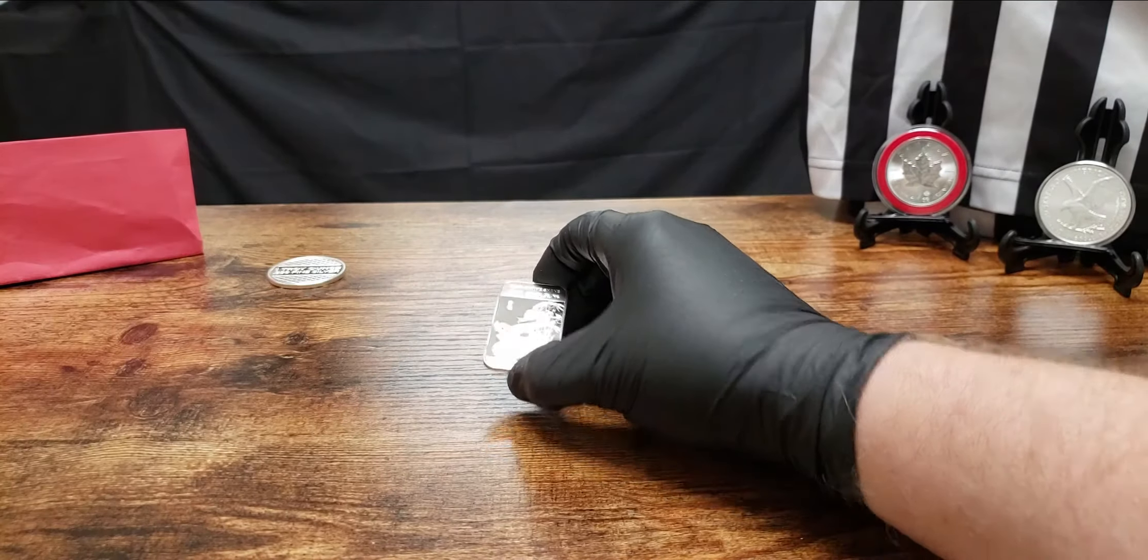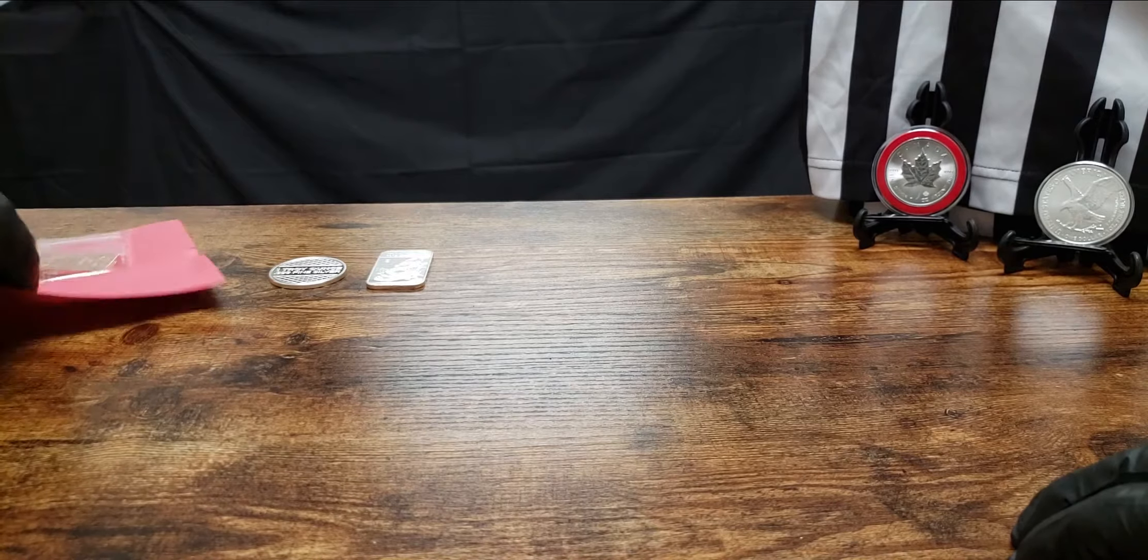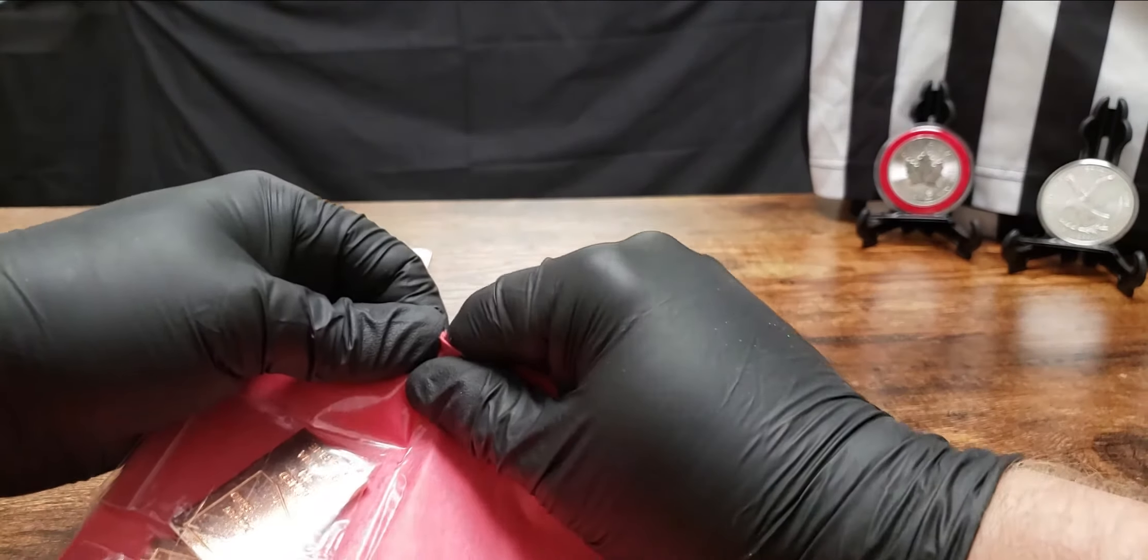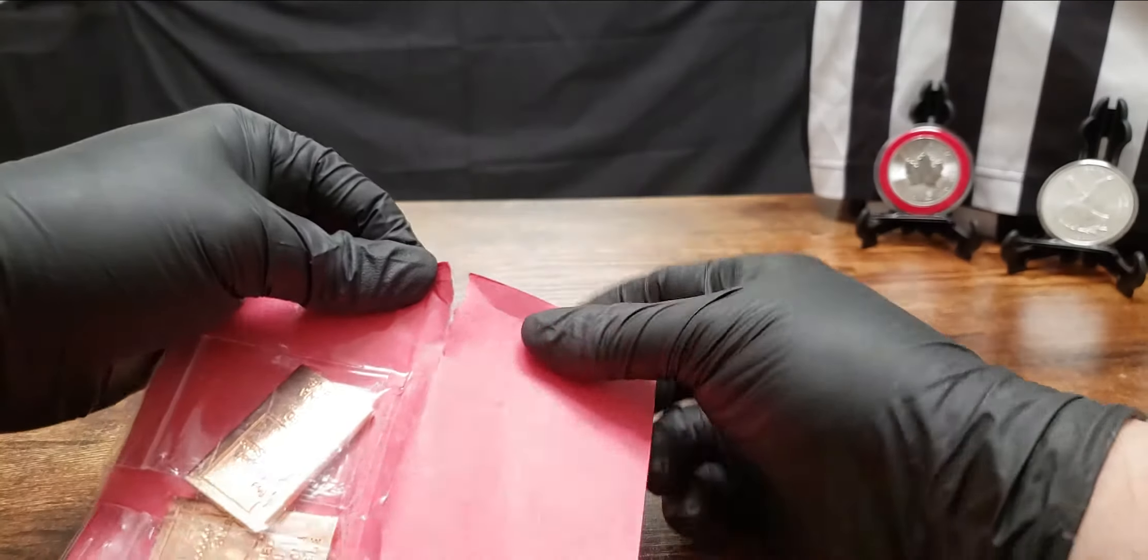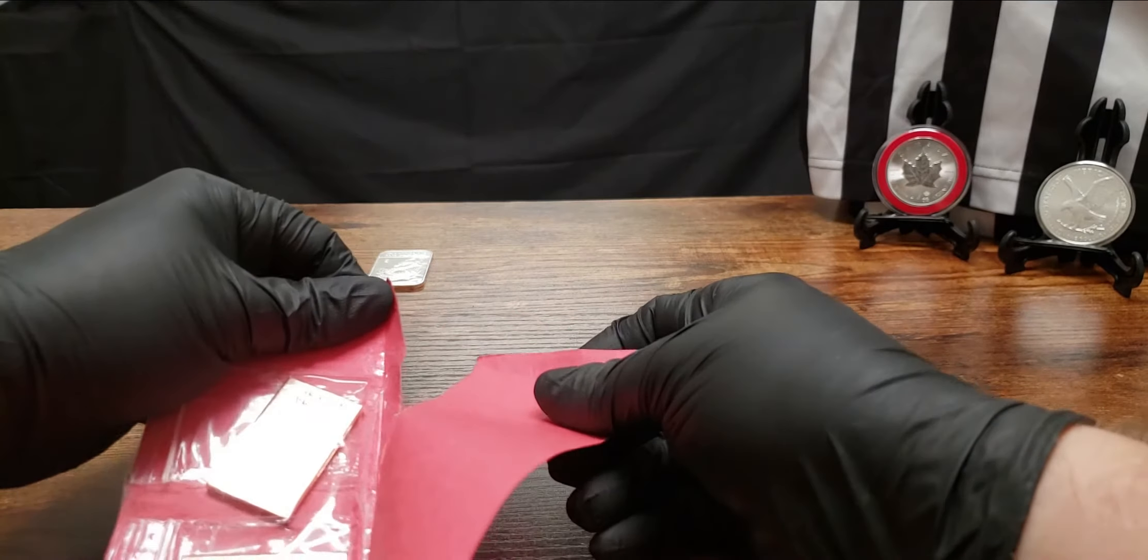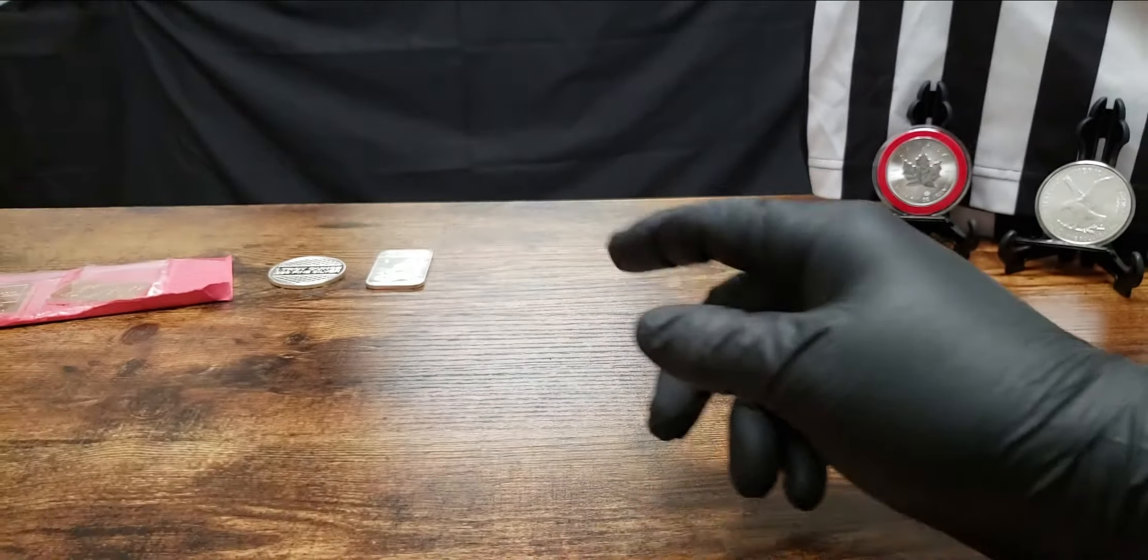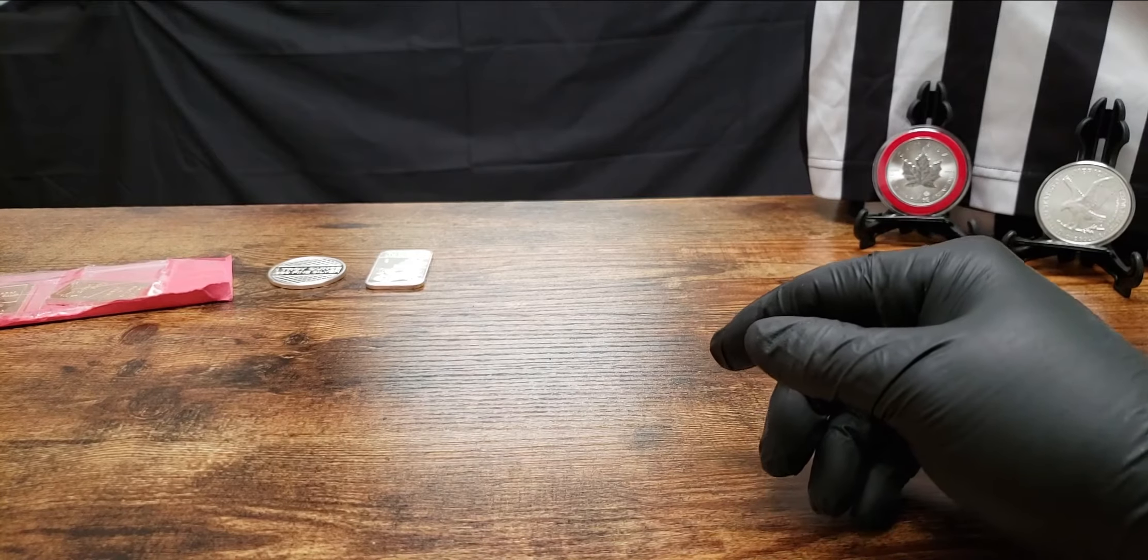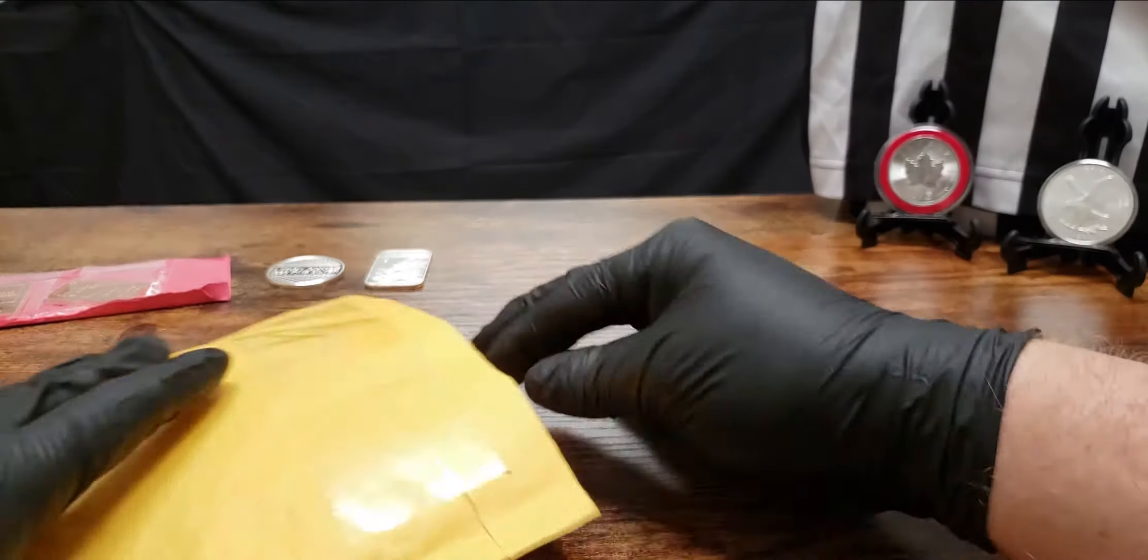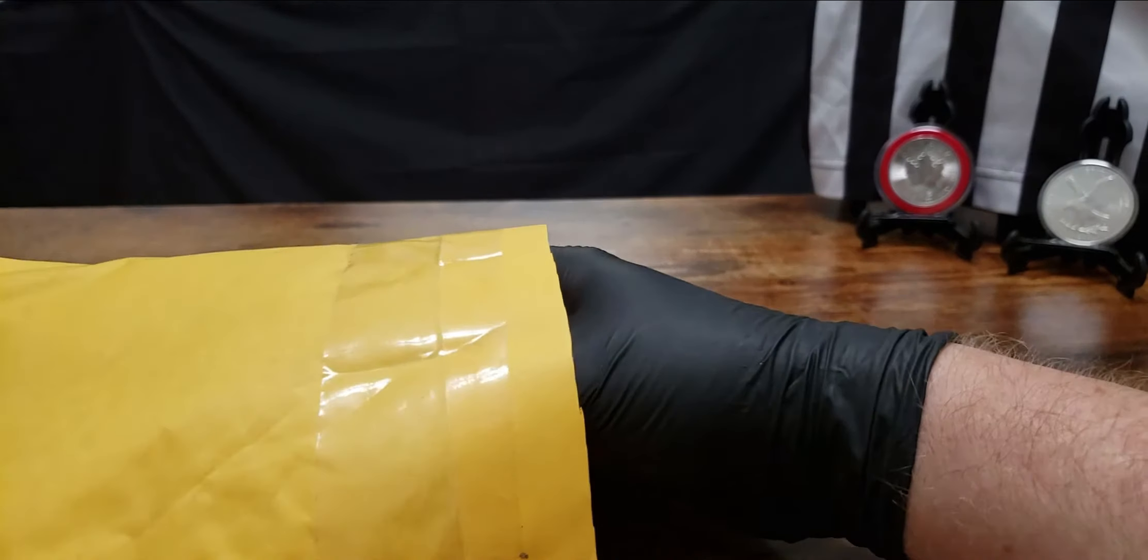Alright, so we've got a one ounce silver round, one ounce bar. We have the two, I believe, two ounce copper bars that made the referee tap out. No shame in that, sometimes you got to live another day.